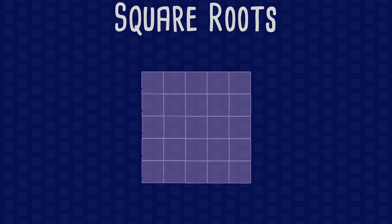Here we have a square which represents a square number. The area of this square is 25 centimetres squared. Therefore 25 is a square number.